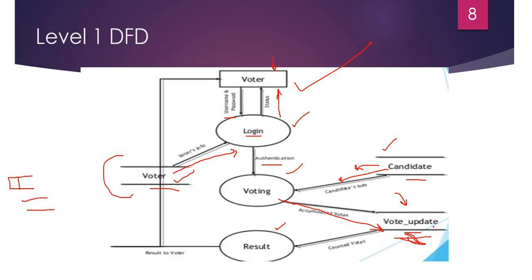All the updated votes will be counted automatically in the system, and on the basis of those counted votes, the result will be compiled and shown to the voter. The voter can see the result — how many votes each candidate received. This is how the online election system works. This is the Level 1 DFD for an online election system.